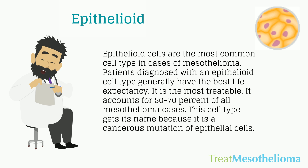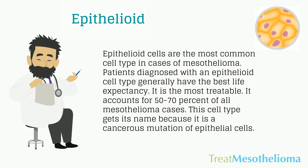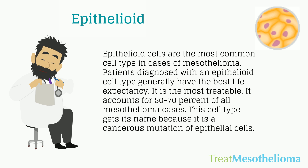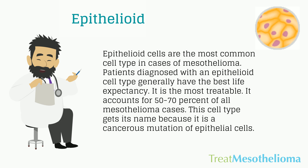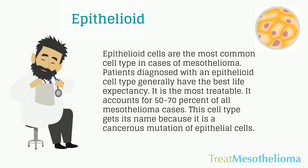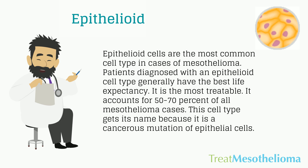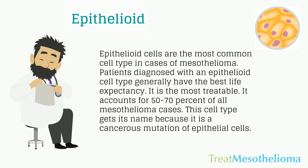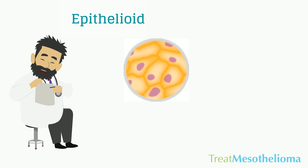Epithelioid cells are the most common cell type in cases of mesothelioma. Patients diagnosed with an epithelioid cell type generally have the best life expectancy — it is the most treatable. It accounts for 50–70% of all mesothelioma cases. This cell type gets its name because it is a cancerous mutation of epithelial cells.